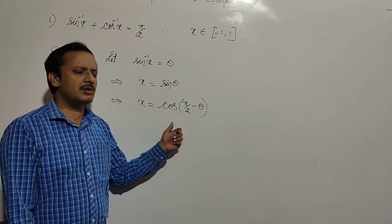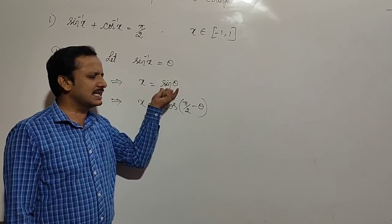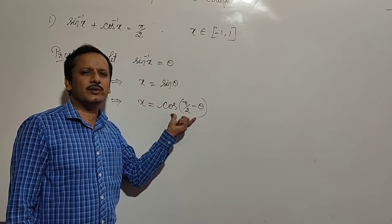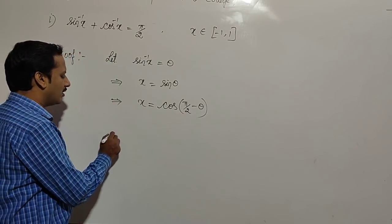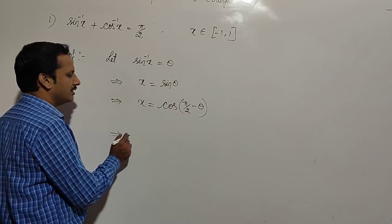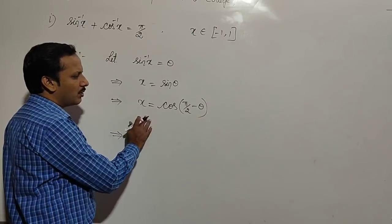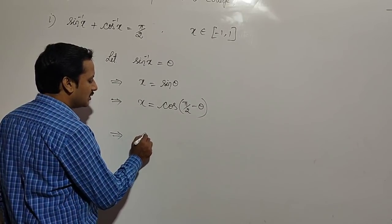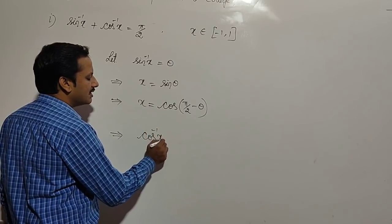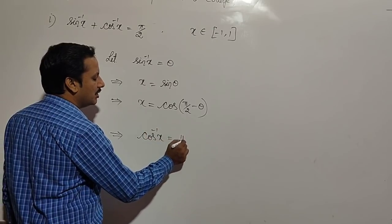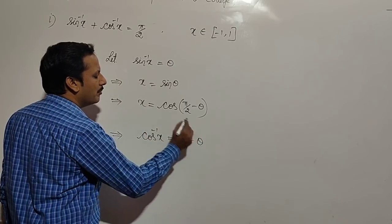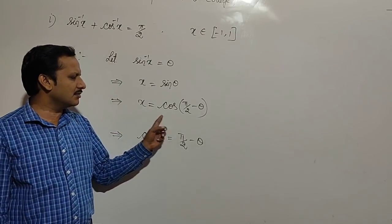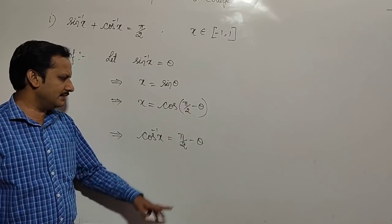So x is equal to cos of pi by 2 minus theta. I have replaced sin theta by cos of pi by 2 minus theta. Now applying the definition of cos inverse, we can write cos inverse x is equal to pi by 2 minus theta.